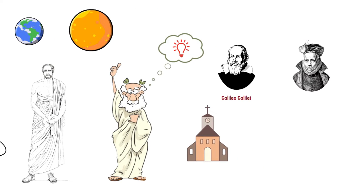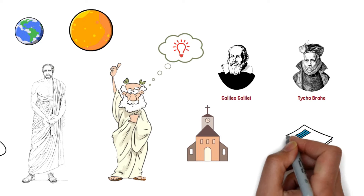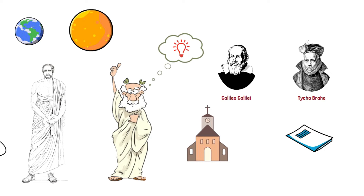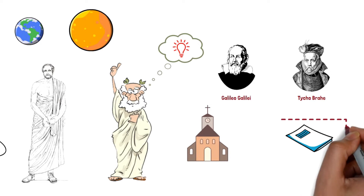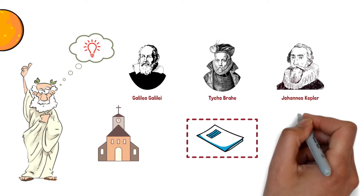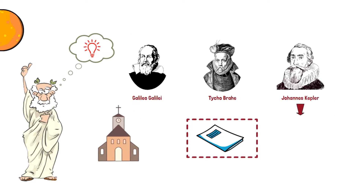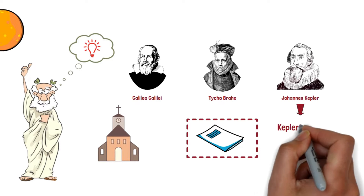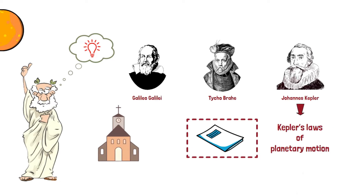At the same time, a nobleman from Denmark, Tycho Brahe, spent his entire life recording the observations of the planets with his naked eye. He accumulated various information about the motion of the planets. All of his compiled data was later analyzed by his assistant, Johannes Kepler, and he arrived at three elegant laws of planetary motion, now popularly known as Kepler's laws of planetary motion.